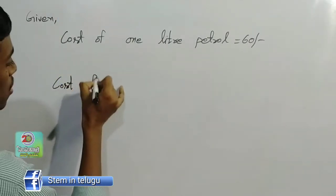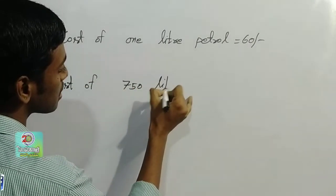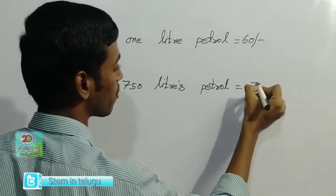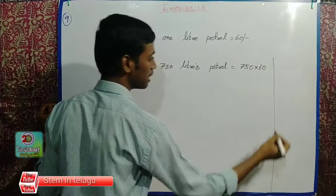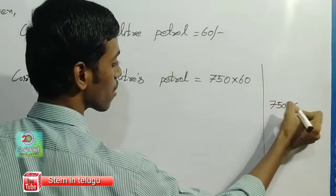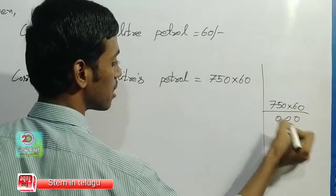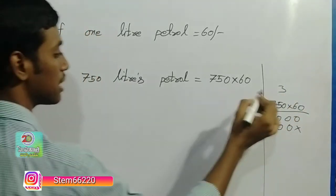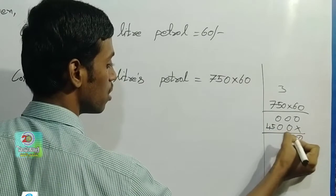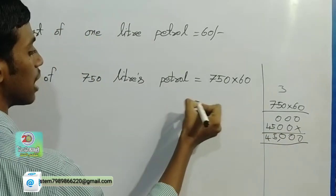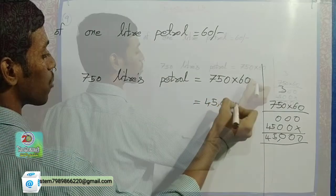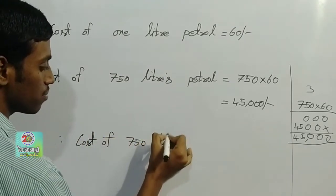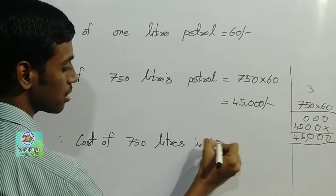Cost of 750 liters of petrol: 750 into 60. Rough work — 750 into 60. Six sevens are 42, 42 plus 3 is 45, giving us 45,000. Therefore, cost of 750 liters is 45,000 rupees.